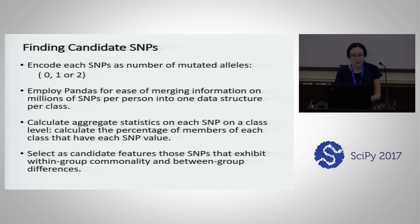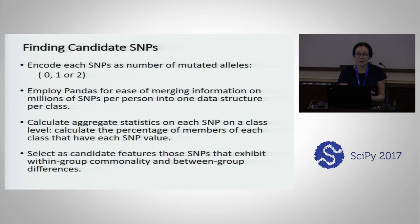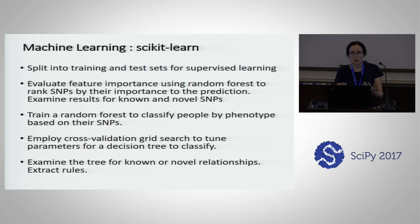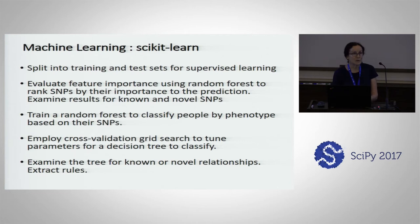We calculate aggregate statistics on each SNP at the class level. When you have two phenotypes, each in one class, we aggregate the information and select the candidate features — those SNPs that have within-group commonality but between-group differences. In the machine learning phase, after getting the candidate SNPs, we've gone from millions of SNPs across about 40,000 genes down to 100 or so candidates. We split into testing and training sets for supervised learning, and evaluate feature importance using Random Forest to rank SNPs by their importance.